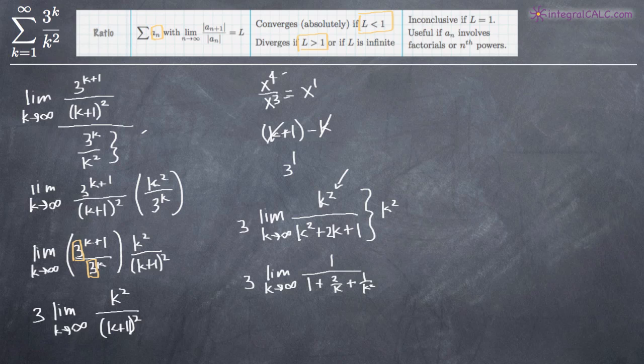So now we can evaluate because when we plug infinity in for k, this term here, 2 over k, will go to 0 because the denominator of that particular fraction becomes very large. And when the denominator goes to infinity and becomes large, the entire term is going to approach 0. So that will become 0. This term here, 1 over k squared, again the denominator will become infinitely large and that term will approach 0. So what we're left with is 3 times the limit as k goes to infinity of 1 over 1, which is just 1. So our answer here is 3.